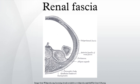Inferior attachment: the layers do not fuse. The posterior layer descends downwards and fuses with the iliac fascia. The anterior layer blends with the connective tissue of the iliac fossa. The anterior fascia and posterior fascia fuse laterally to form the lateral canal fascia, which fuses with the transverse fascia.